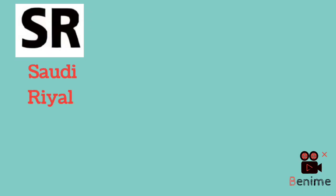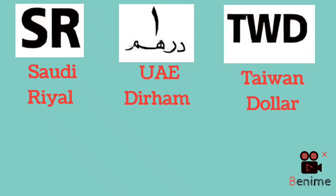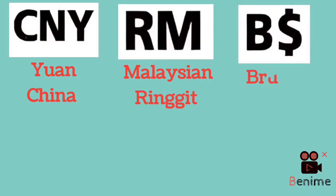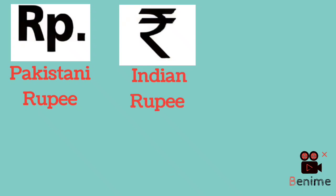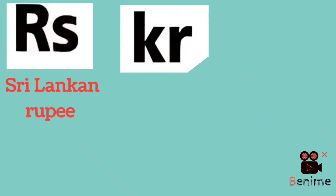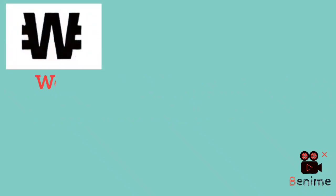SR - Saudi Riyal, one dirham - Joey Dirham, TWD - Taiwan Dollar, CNY - Yuan China, RM - Malaysian Ringgit, BS - Brunei Dollar, RP - Pakistani Rupee, Indian Rupee, CHF - Franc Switzerland, RS - Sri Lankan Rupee, KR - Krona Sweden, NZD - Dollar New Zealand.